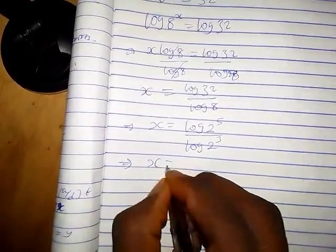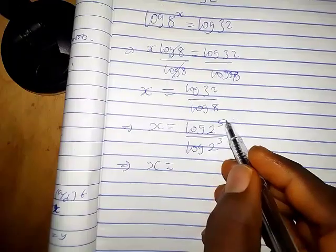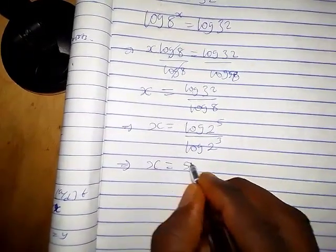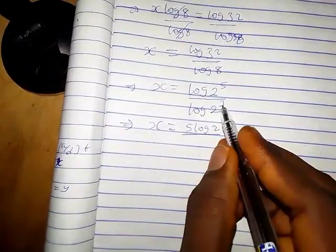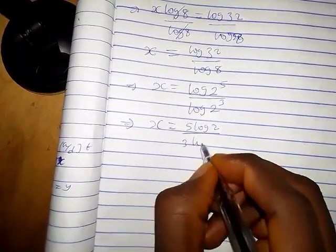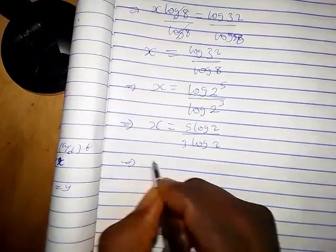We can again use the power rule to multiply the logarithms. So we have 5 log 2 over 3 log 2.